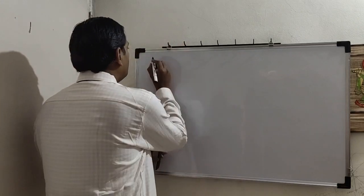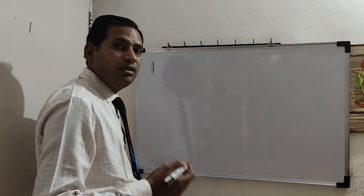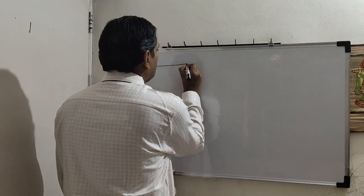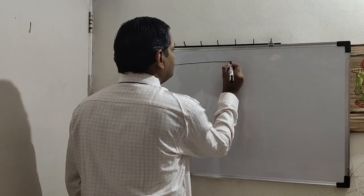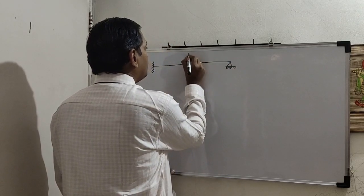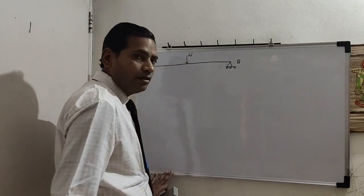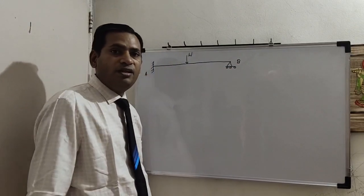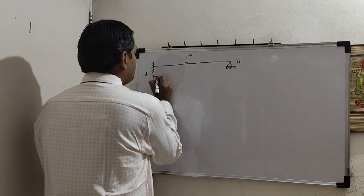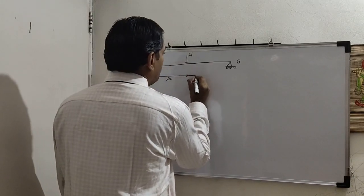Today we shall see a beam whose one end is fixed and the other end is a roller support. We shall keep the load at the center, and for this beam we have to find the collapse load using plastic analysis. This is a central point load. So if the span is L, the distance of the load from each end is L by 2.